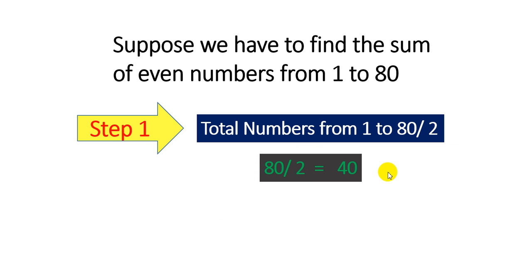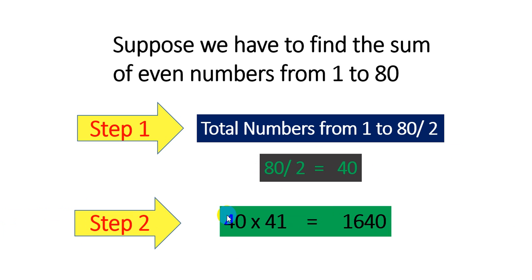You get 40 in the first step. This 40 we take in the second step and multiply it by the next number, that is 41. So 40 multiplied by 41, that is equal to 1640. And that's enough. You got the sum of all even numbers from 1 to 80.